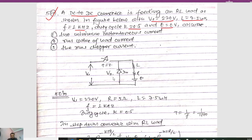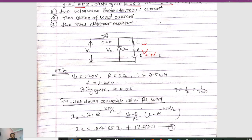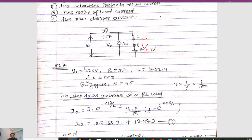This is the circuit diagram and the values of L and R are given. The value of E is 0V. The value of Vs is 220V, R is 5 ohm, L is 75mH, and frequency is 1kHz. The duty cycle is 0.5, and we know the time period T = 1/f = 1/1000, since frequency is 1kHz.